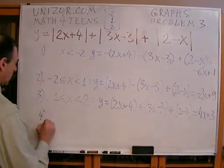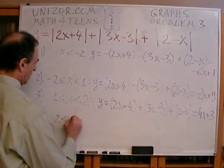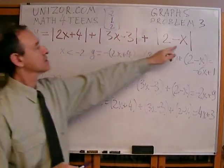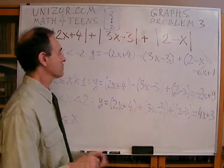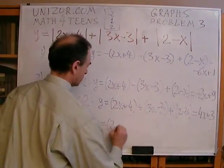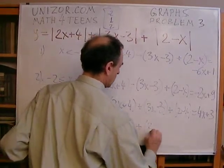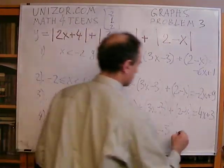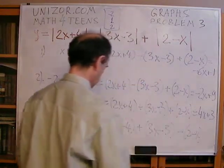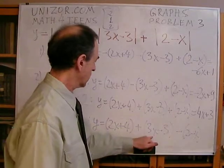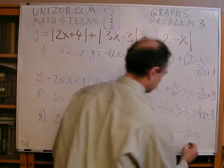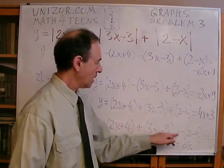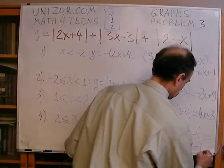And the last segment which we have to consider is when x is greater or equal to two. So when it's very positive, this is positive, this is positive, and this is negative. So we should retain the signs of these guys and change this one. So y is equal to two x plus four plus three x minus three. And here we have to reverse the signs, it's minus two minus x. Let's calculate: two x, three x is five x, and x is six x. Four minus three is one, minus two is minus one. So it looks like this.